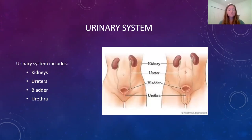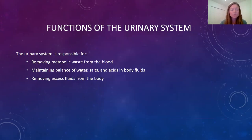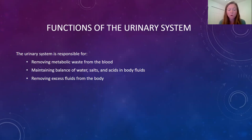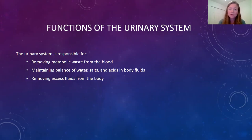Moving on to the urinary system. This is made up of the kidneys, ureters, bladder, and urethra. The urinary system is responsible for the removal of metabolic waste from the blood. It also helps maintain proper balance of water, salt, and acids in our body fluids and removes excess water from the body. Like I mentioned earlier, the urinary system also plays a big role in pH balance of the body — this is where you're looking at metabolic acidosis and metabolic alkalosis. Because the urinary system maintains the balance of water and salts, it also has a large role in our blood pressure.